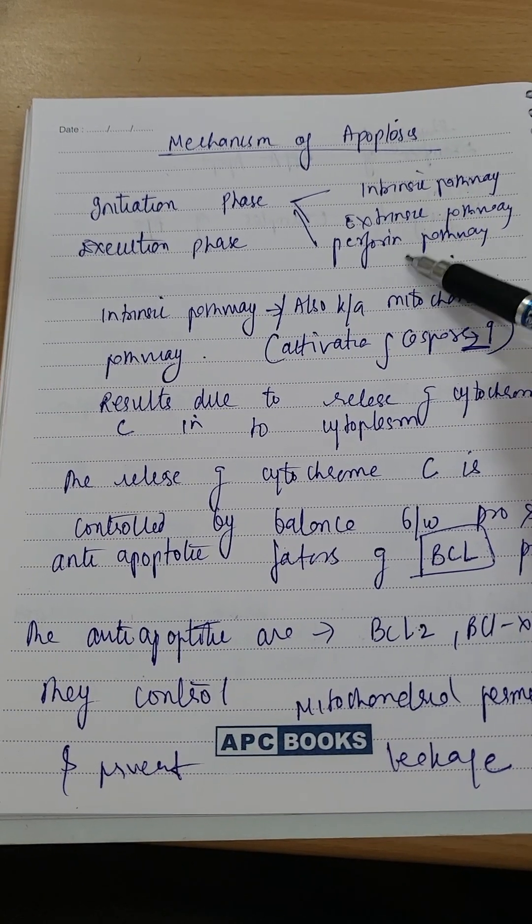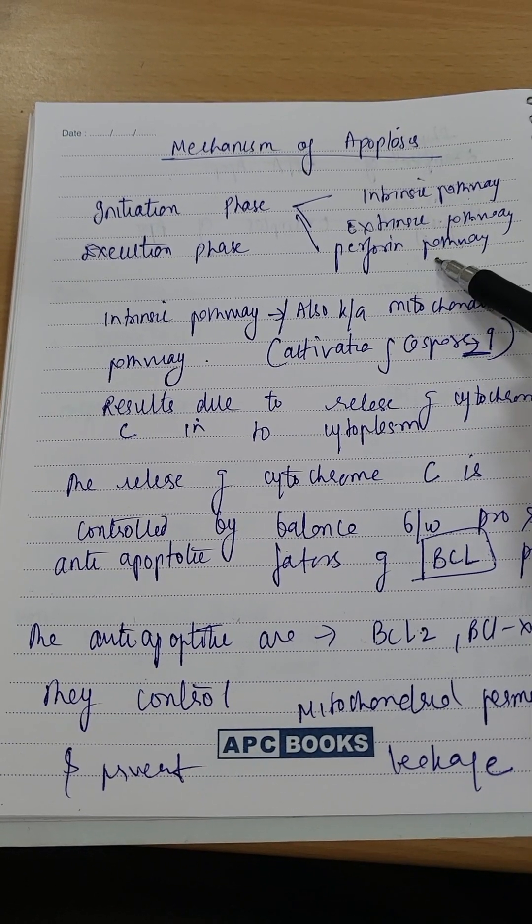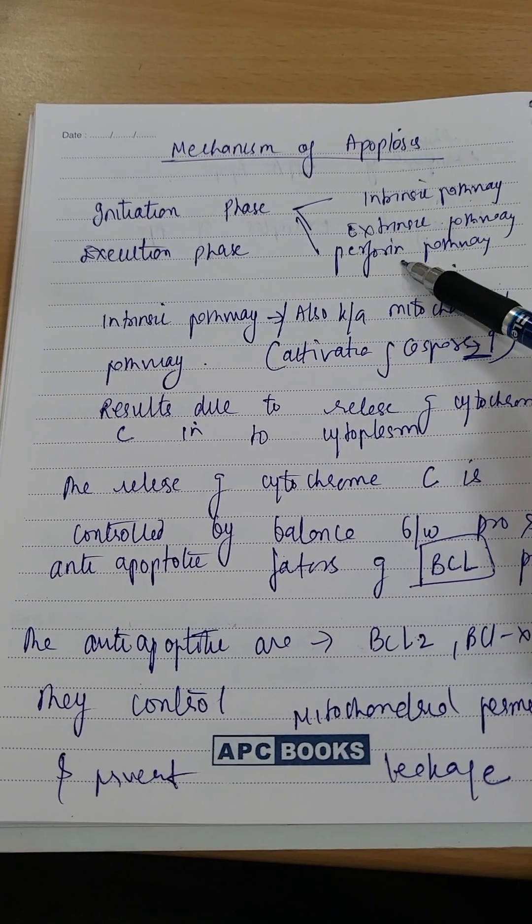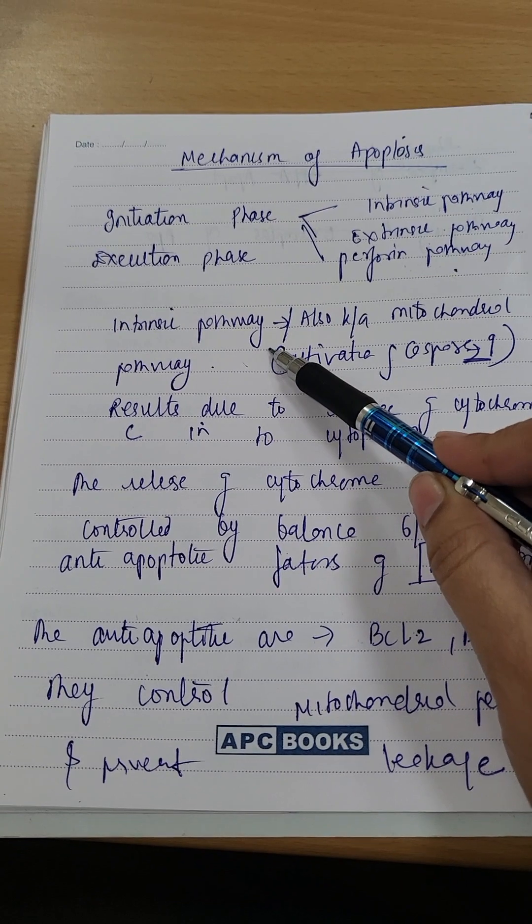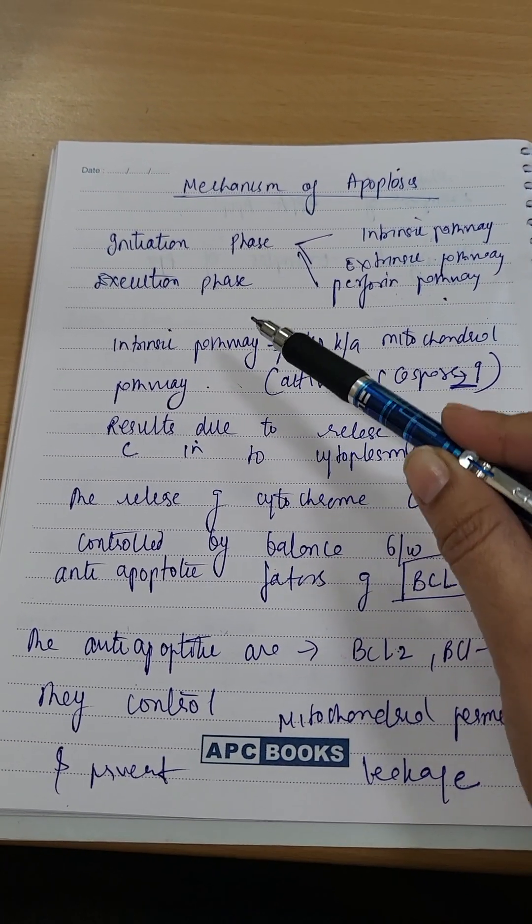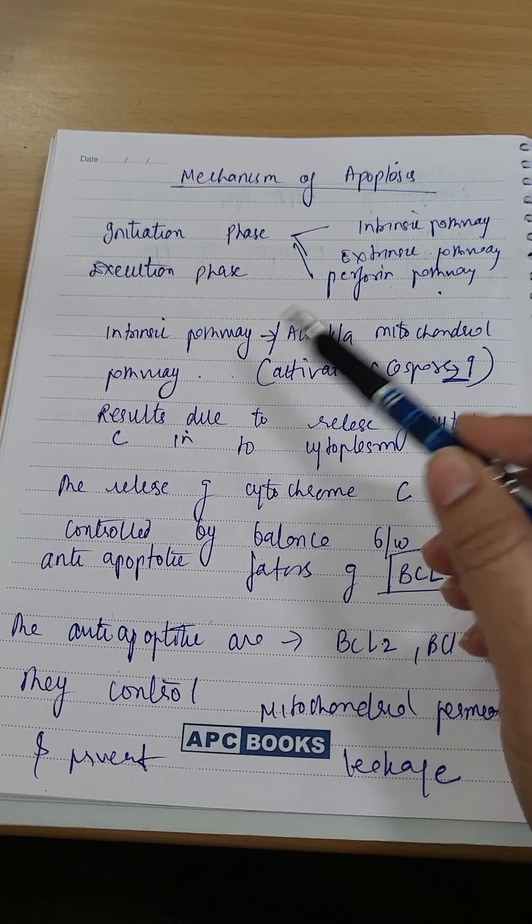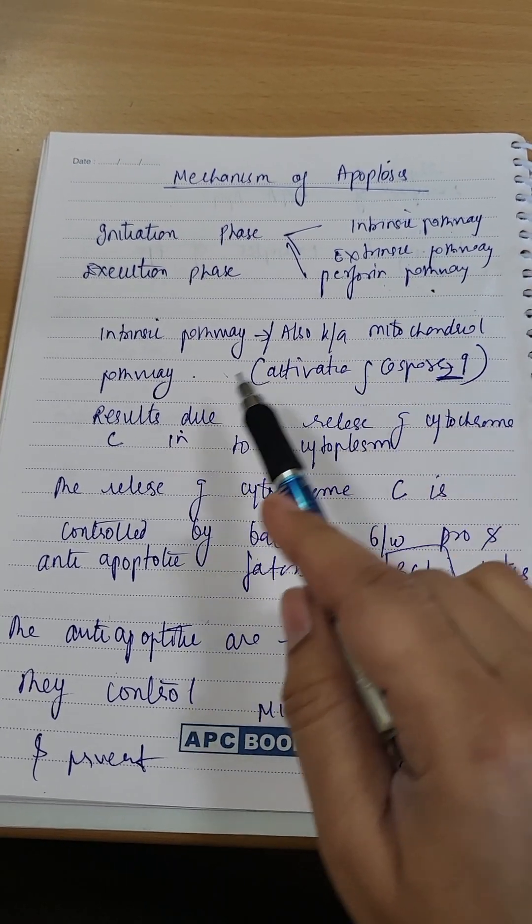Intrinsic, extrinsic, and perforin. Perforin is basically for viral or tumor infected cells. So we will study in detail about intrinsic and extrinsic. Intrinsic pathway is also known as mitochondrial pathway. Both intrinsic and extrinsic pathways activate caspases.